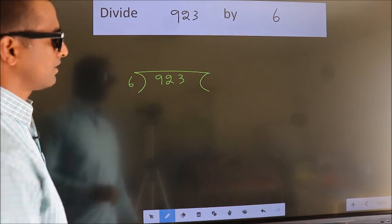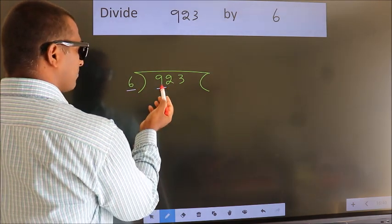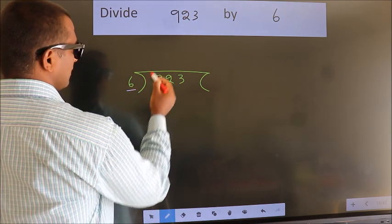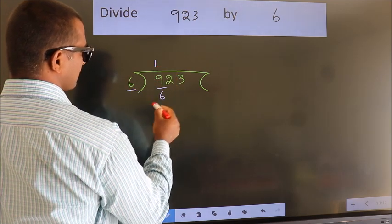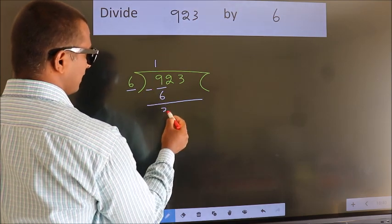Next, here we have 9, here 6. A number close to 9 in the 6 table is 6 times 1 is 6. Now we should subtract. We get 3.